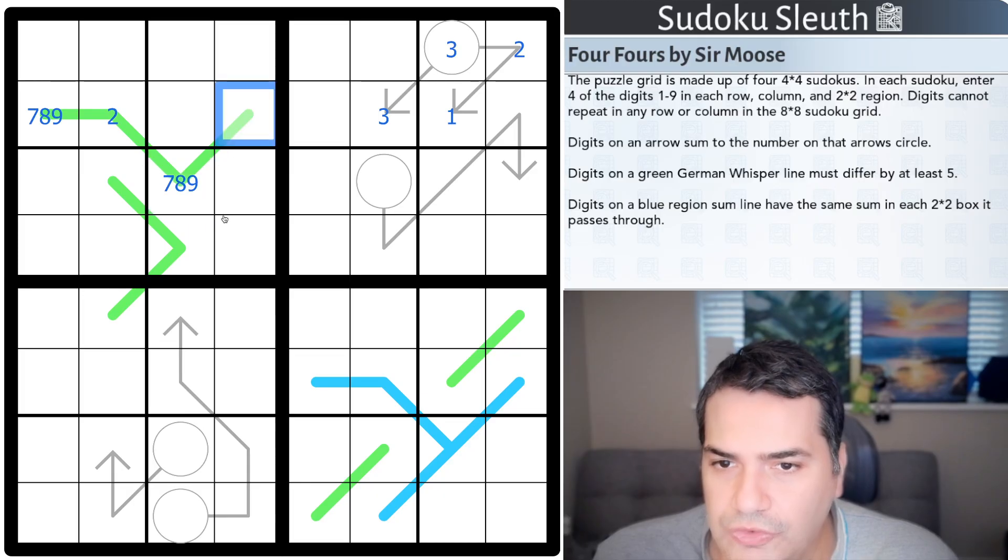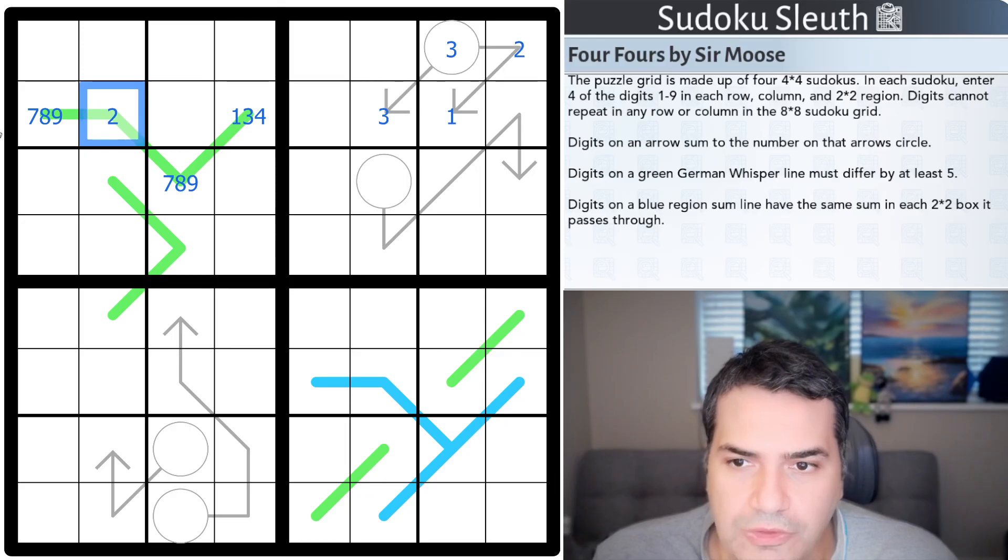So, awful example there with my 1, 2, 3, 4. If this was a 2, these two cells, which are adjacent on the green German whisper line, would have to be 7, 8, or 9 to be 5 or more away. And, of course, it oscillates. So, whatever this digit is, well, it can't be 7, 8, or 9. It's going to have to be a low digit such as 1 or 3, not the 2. It can actually be a 4 because we've already placed it. And, you notice this pattern of high, low, high, low. Low, high, 6, 7, 8, 9. Low, 1, 2, 3, 4. And the oscillation between them, no fives on German whisper lines.